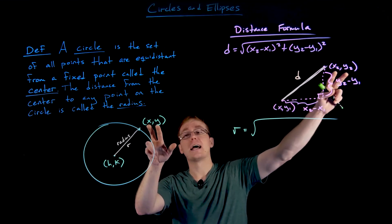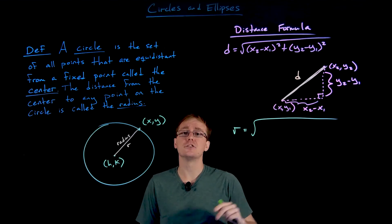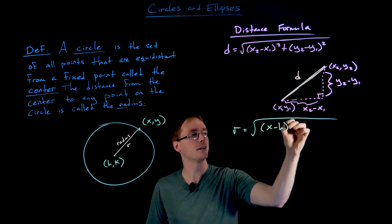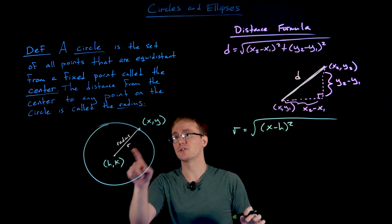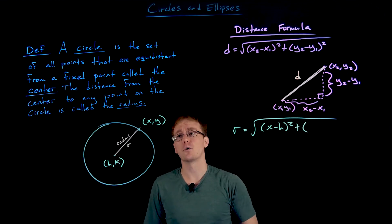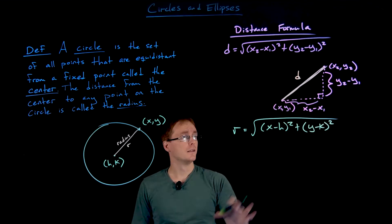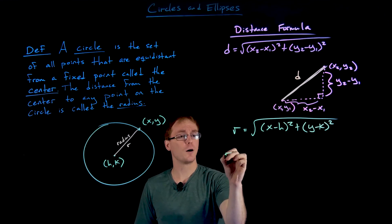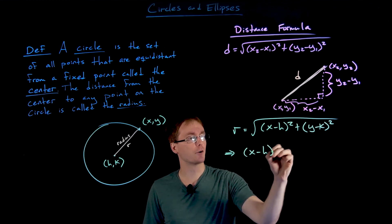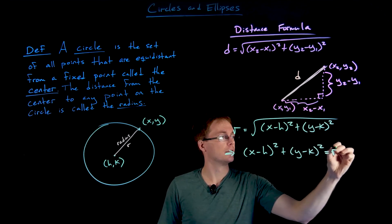We think of (x, y) as our (x₂, y₂) point and (h, k) as our (x₁, y₁) point, then plug into the distance formula. That gives us r equals the square root of (x − h)² + (y − k)². Squaring both sides gives us the more common form: (x − h)² + (y − k)² = r².